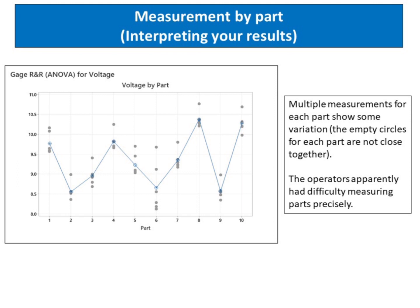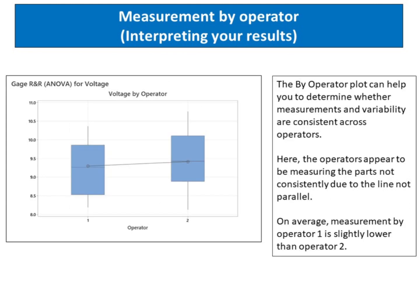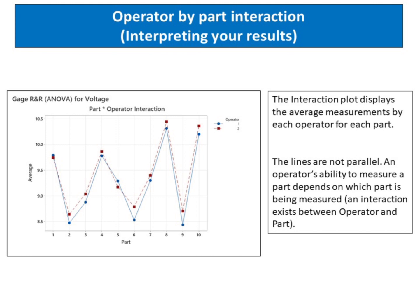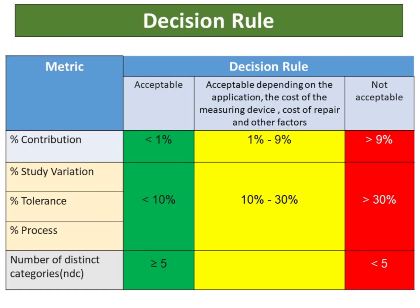Measurement by Part: Multiple measurements for each part show some variation. The circles for each part are not close together, indicating that operators had difficulty measuring parts precisely. Measurement by Operator: The by-operator plot helps determine whether measurements and variability are consistent across operators. Here, the operators appear to be measuring the parts inconsistently, as the lines are not parallel. On average, measurements by operator one are slightly lower than operator two. Operator by Part Interaction: The interaction plot displays the average measurements by each operator for each part. The lines are not parallel, meaning an operator's ability to measure a part depends on which part is being measured — an interaction exists between operator and part. The page summarizes the decision rules for percent contribution, percent study variation, percent tolerance, and NDC.